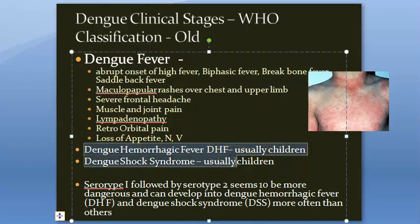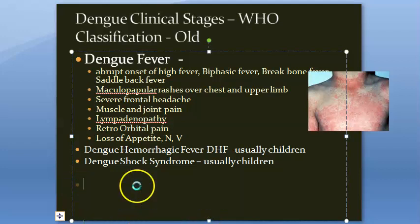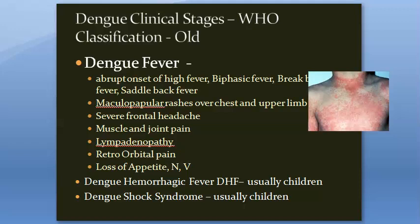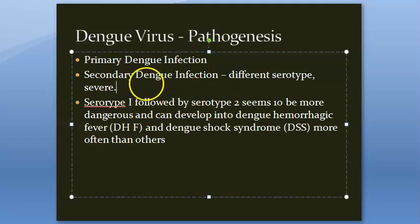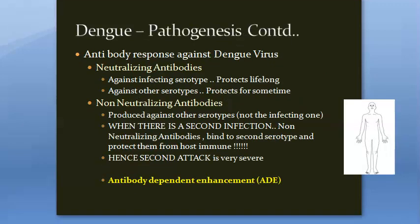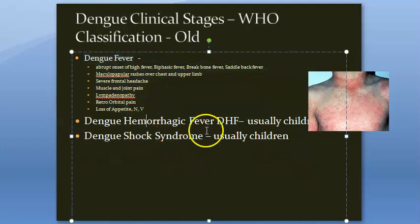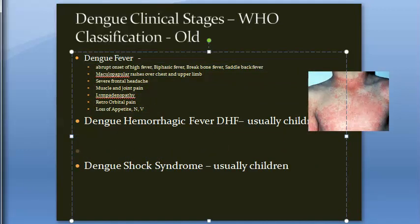Dengue Hemorrhagic Fever and Dengue Shock Syndrome usually affect children. Serotype 1 followed by Serotype 2 seems to be more dangerous and can more often develop into DHF or DSS. DHF is characterized by high-grade continuous fever, hepatomegaly, and thrombocytopenia — platelet count decreases to less than 1 lakh per millimeter cube. The packed cell volume (hematocrit) is raised by 20 percent.